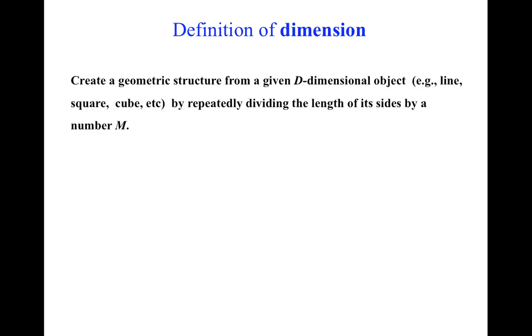Now we can write down our precise definition of dimension. Suppose we do what we've been doing. That is, we create a geometric structure from a given d-dimensional object, like a line, square, or cube.